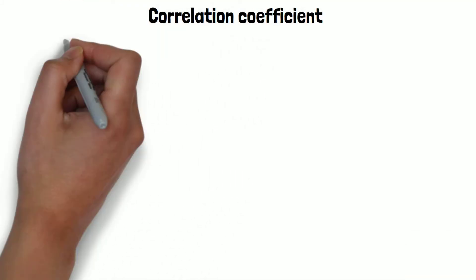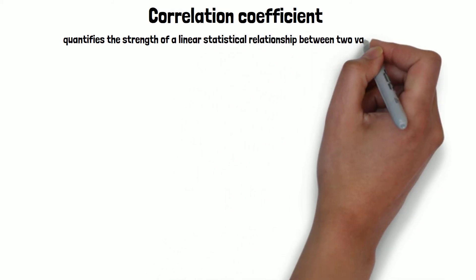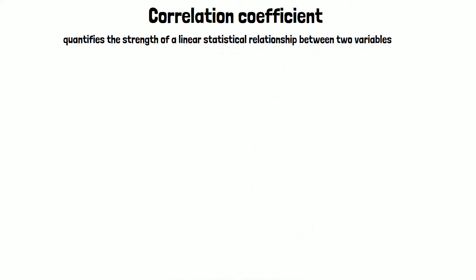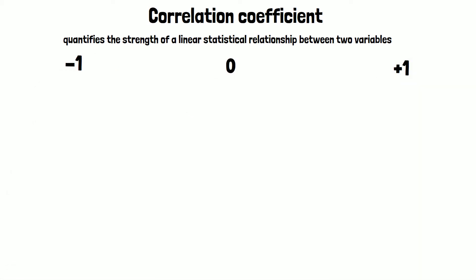The correlation coefficient is a specific measure that quantifies the strength of a linear statistical relationship between two variables as well as its direction. There are several different measures for the degree of a correlation, depending on the type of data that is evaluated.